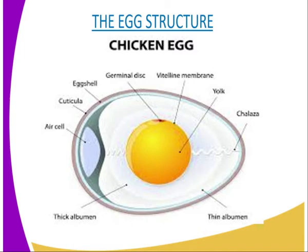The other part is the albumin or egg white. The albumin or egg white is also a food reserve which is rich in carbohydrates, and therefore it also provides food to the developing embryo.